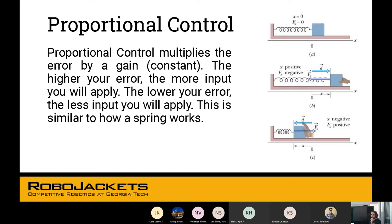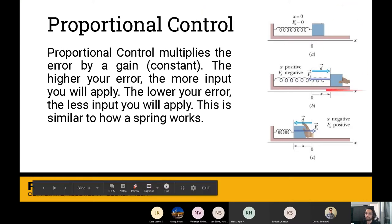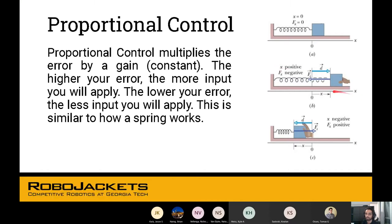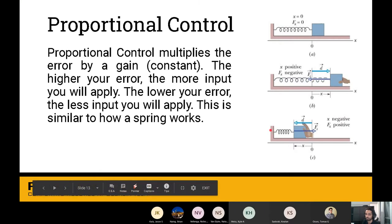Proportional control is you take the error and multiply it by a constant. What does that mean? If there's more error you apply more input. If the error is smaller you don't need to apply that much input. This is similar to how a spring works. At equilibrium it's not going to move. If you pull it, there's going to be F equals kx. The more you pull it, the stronger the spring will try to get back into the same position. If you push it, it will apply the same input but in the opposite direction.